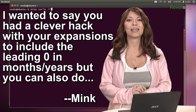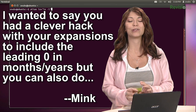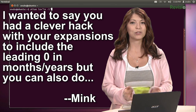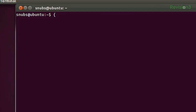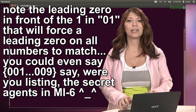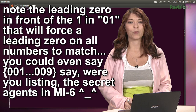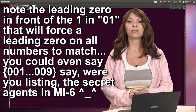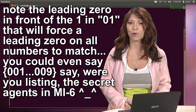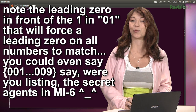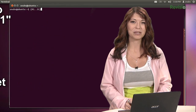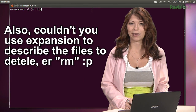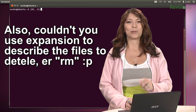Meek says he wanted to highlight the clever hack with expansions to include leading zeros in months and years. You can do something like: {01..31} with a leading zero in front of the one — that will force a leading zero on all of the numbers to match. You could also do {001..009}, say, if you were listing secret agents in MI6! Also, you could use expansion to describe the files to delete with RM — that's a good point too.